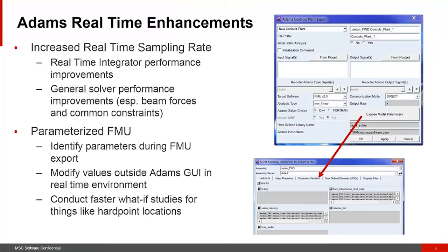This can benefit anybody using an FMU. In functional mock-up interface terms, these are called fixed parameters — essentially exposing parameters to the consumer of an FMU. It has really nice workflow improvements for the real-time user in the online environment, particularly when that person is different from the person who exported the FMU in the first place.